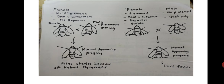In the first case shown in the figure, the female has no P element — only DNA plus cytoplasm — and has no repressor for the P element. The male has a P element and DNA only. Crossing these two leads to normal-appearing progeny; however, the flies are sterile because of hybrid dysgenesis. This female lacking the P element makes the P element mainly responsible for hybrid dysgenesis.